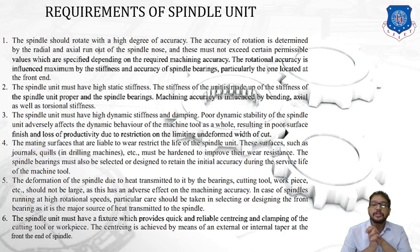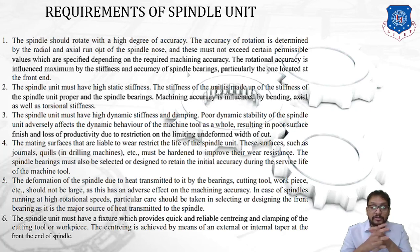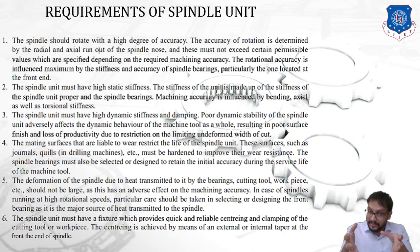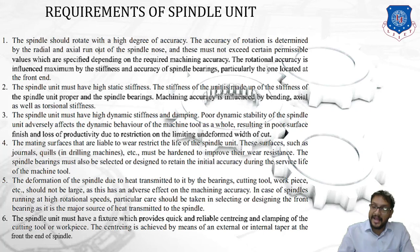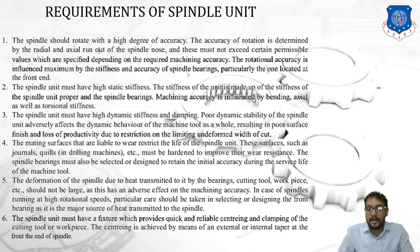The sixth requirement is that the spindle unit must have a fixture which provides quick and reliable centering and clamping of a cutting tool or workpiece. Examples include fixtures for a compound slide, chuck, or mandrels. Centering is achieved by means of an external or internal taper at the front end of the spindle.